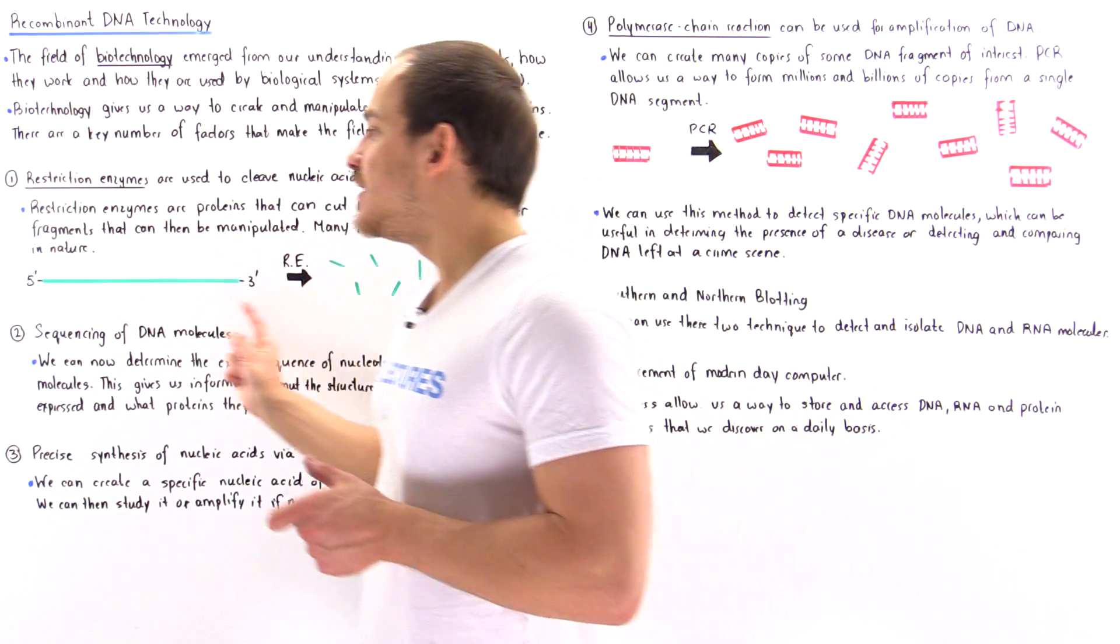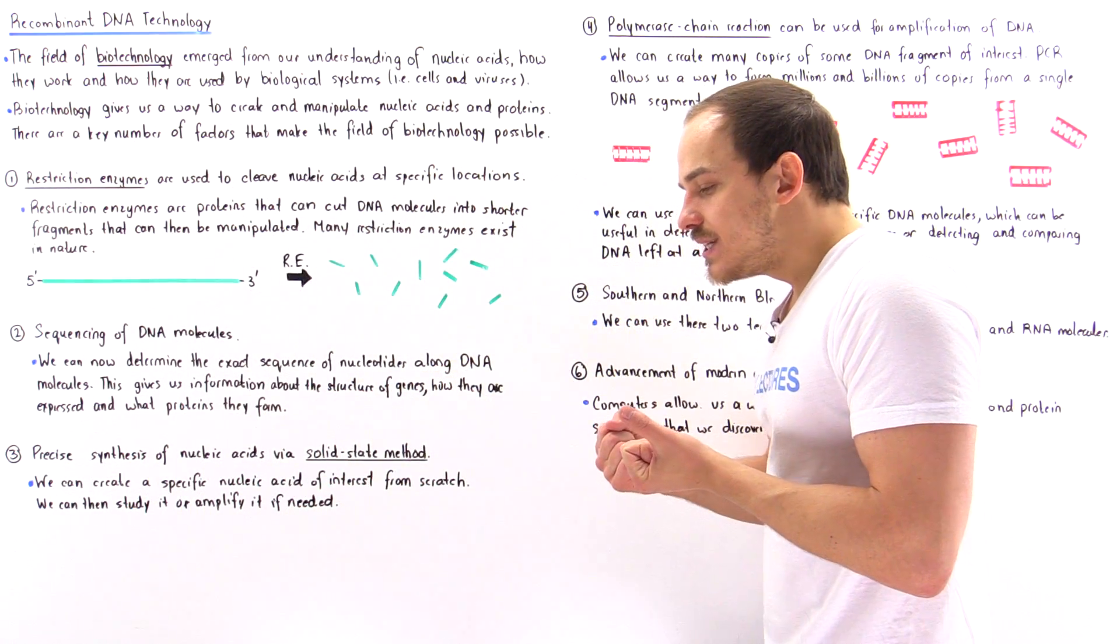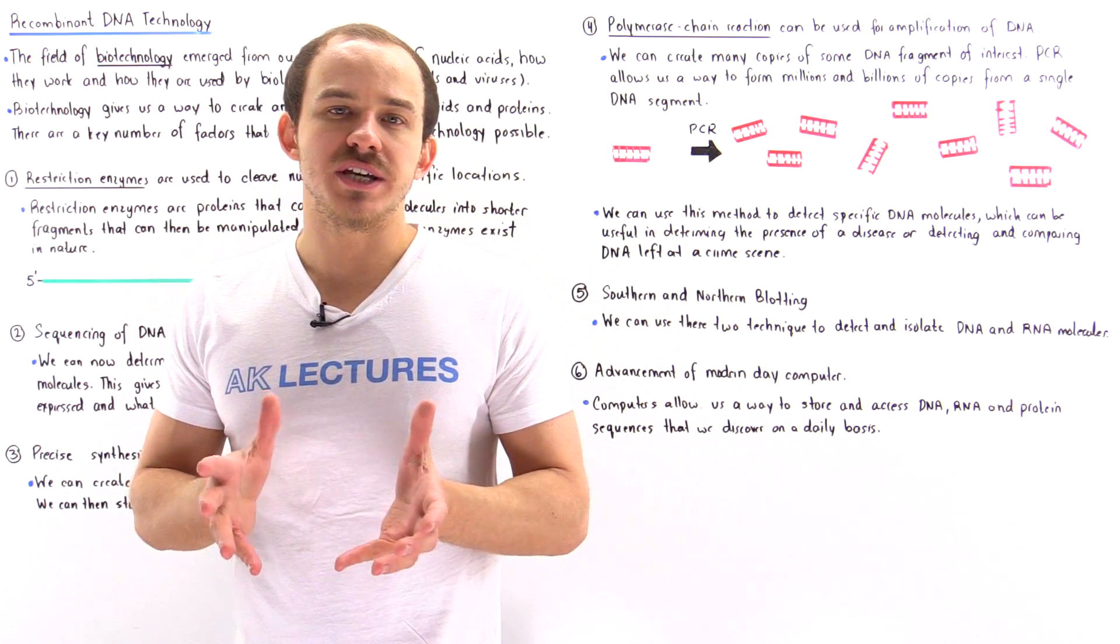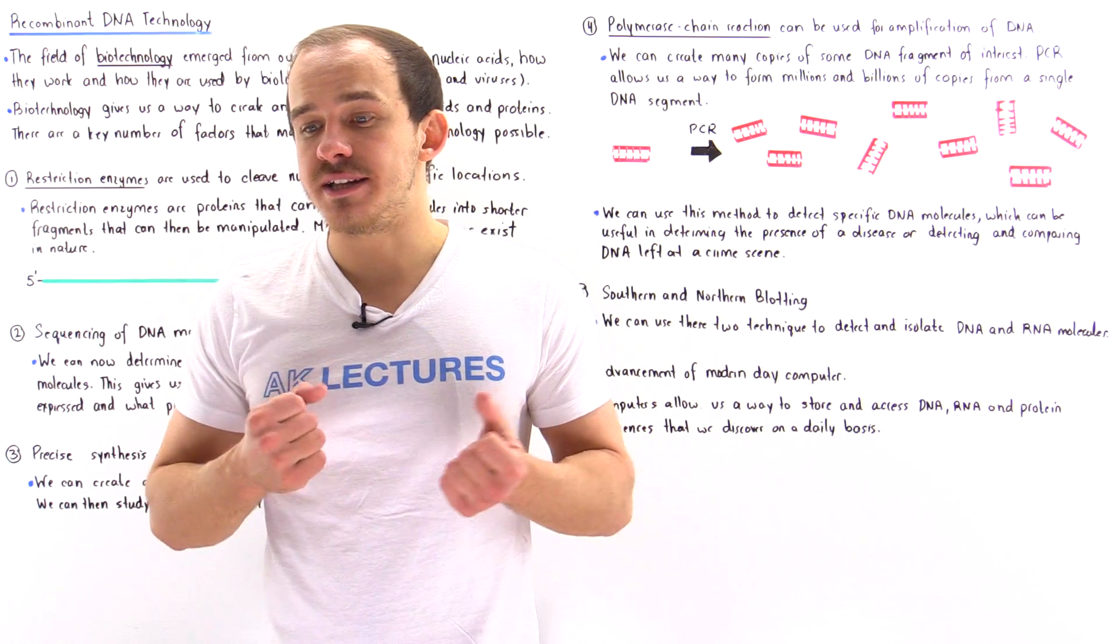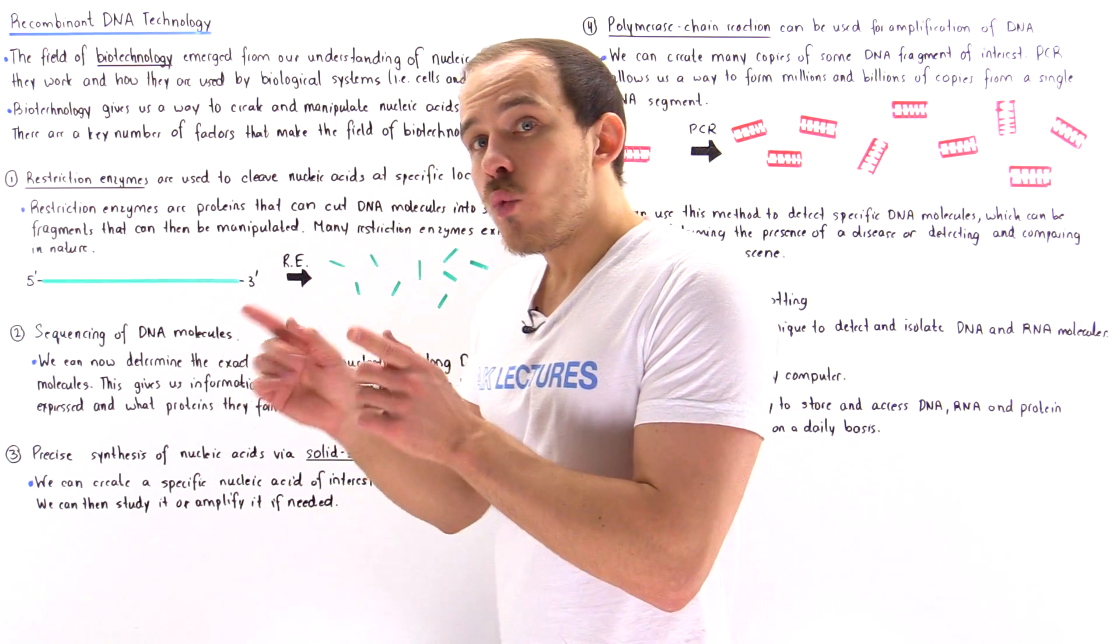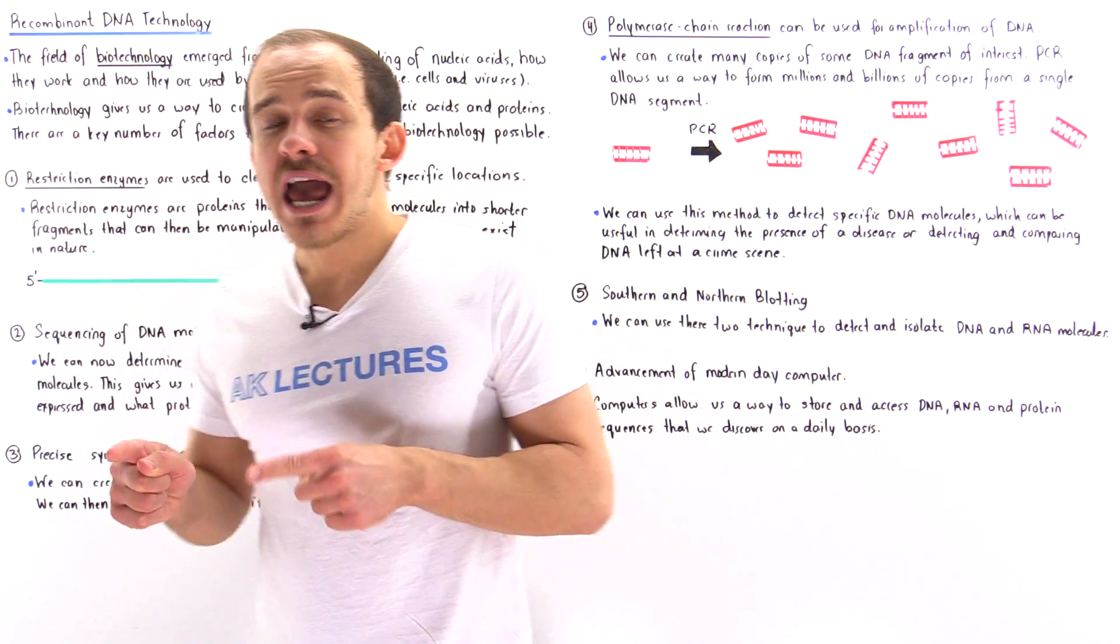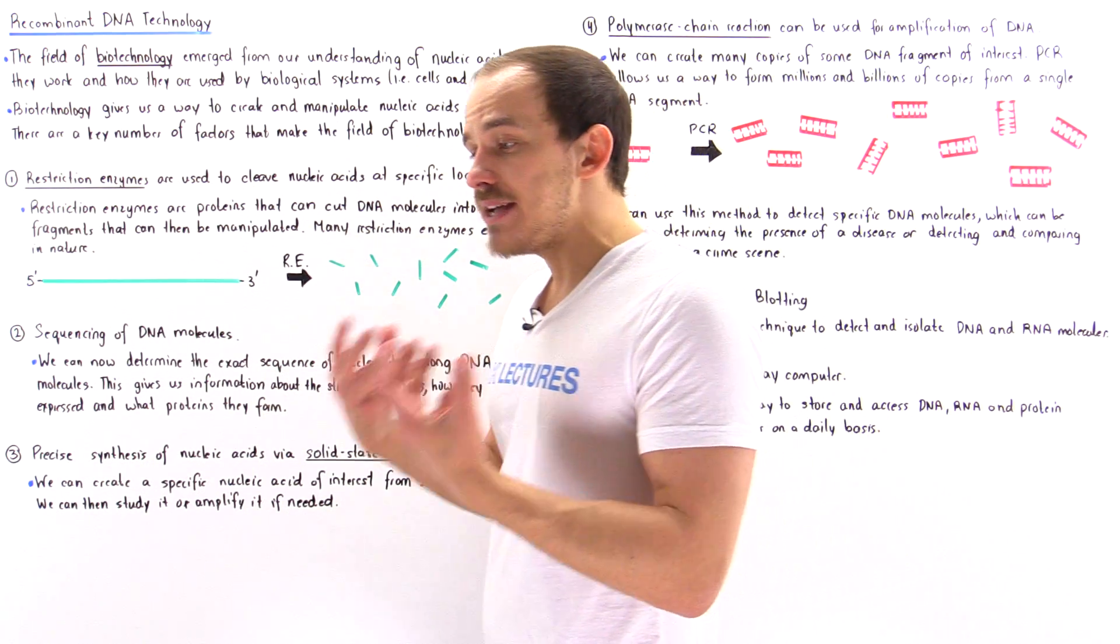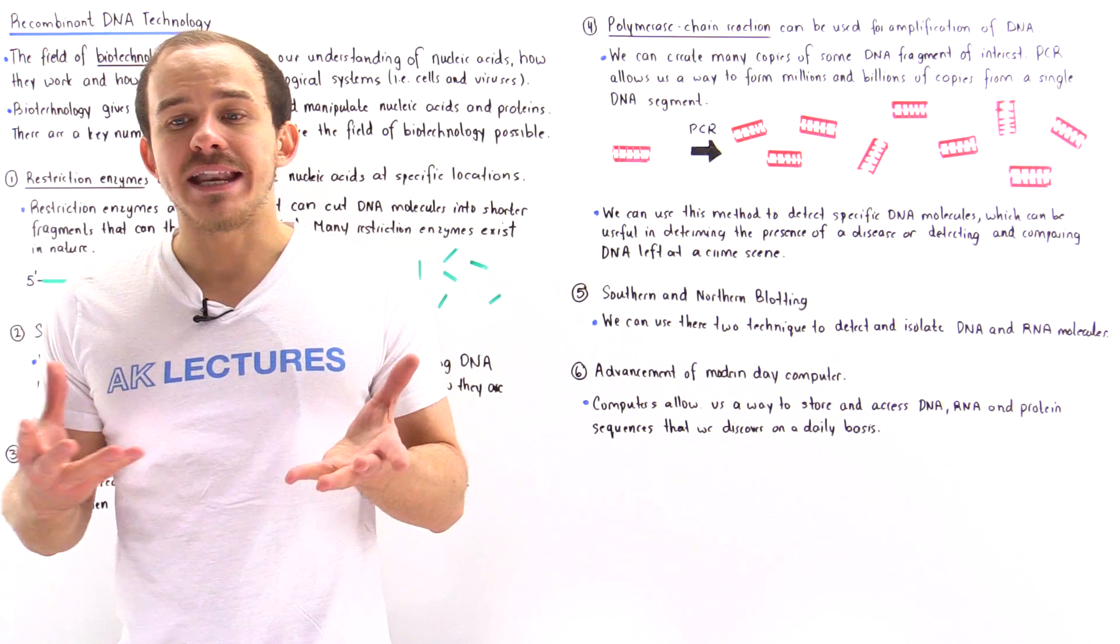And that leads us directly into factor number two. So we are now able to actually determine exactly what the sequence of nucleotides is in any DNA molecule. Now, how is that useful in itself? Well, if we want to study a specific gene, we have to know what the sequence of nucleotides is in that gene. And by using a specific method that we are going to focus on in a future lecture, we can basically determine what the sequence of nucleotides is in any gene.